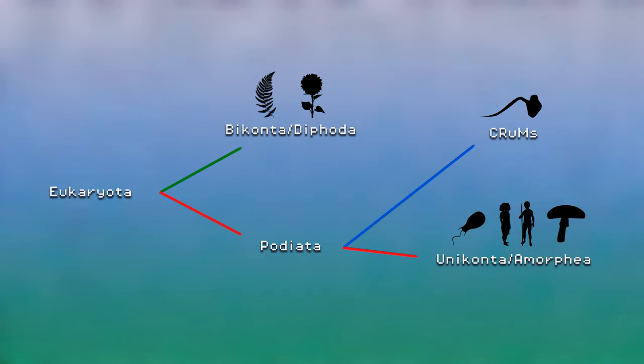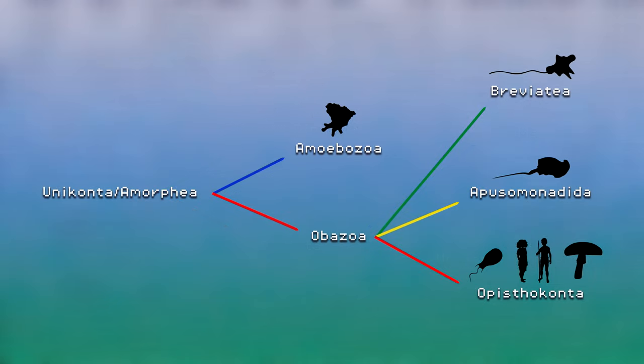There would be several branches occurring between 1.4 and 2 billion years ago when the eukaryotes diverged, branching into Diphota, or the biconts, which became land plants and algae, and Podiata, which includes animals, protists, and fungi. Podiata then branched into Crumbs, a clade containing protozoa such as Colodictionidae and Mantamonadidae, and Uniconta, or Amorphia. 1.4 billion years ago, Uniconta split, separating Amoebozoa from its sister clade Obozoa. Then 1.3 billion years ago, Obozoa split to include Breviadia, Aposomonadia, and the clade Opisthoconta — the clade of life that includes animals, fungi, and choanoflagellates.